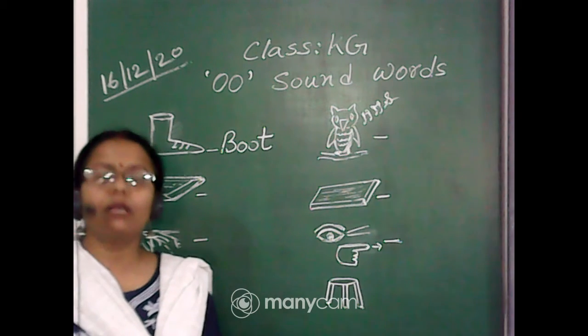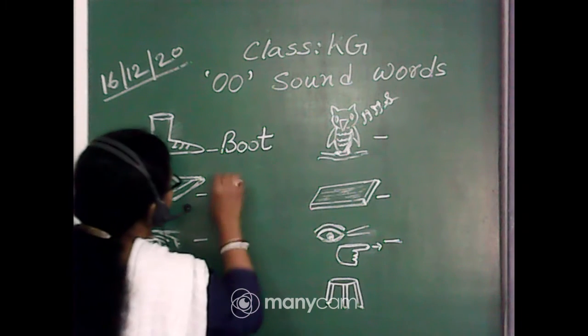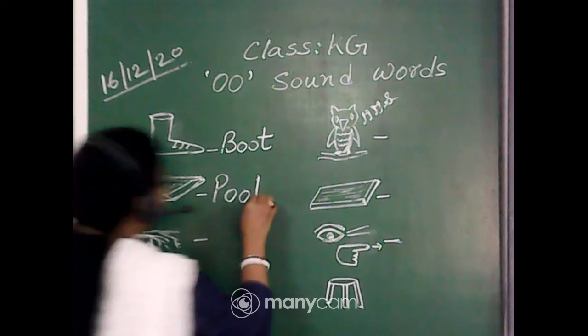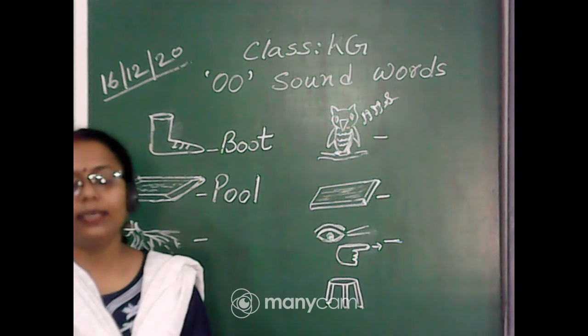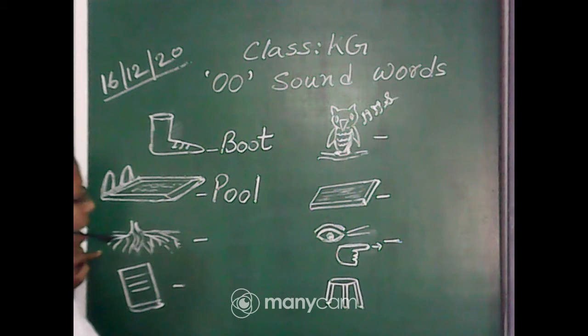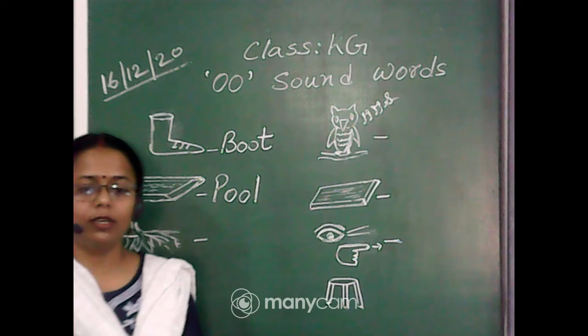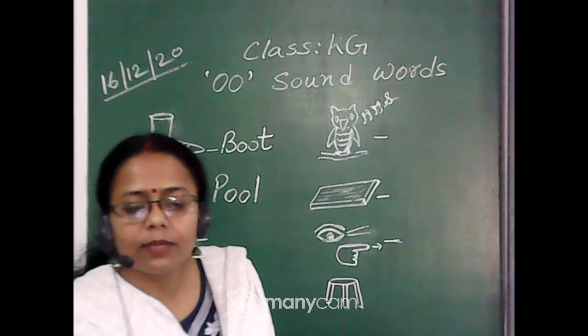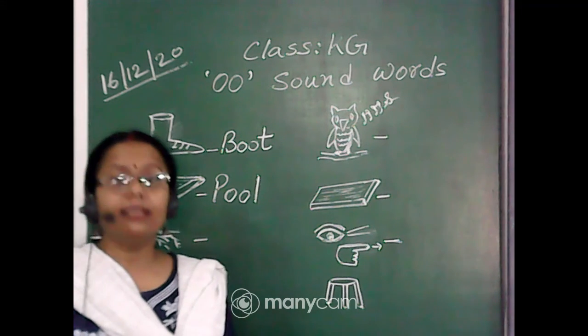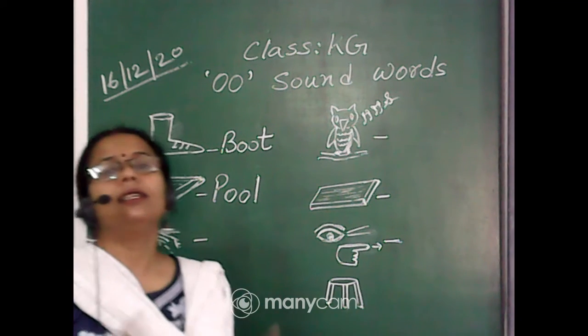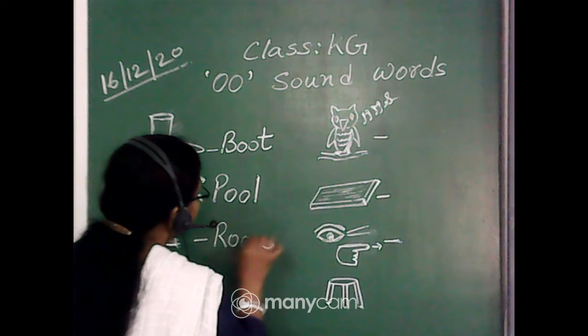The place where we swim, that is called pool. P-O-O-L, pool, right? Yes. Now the part of the plant which is under the ground, that is known as root. That is known as root.